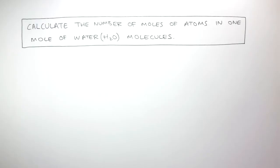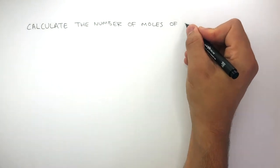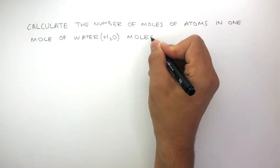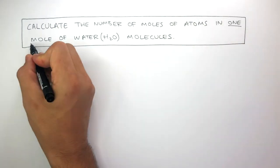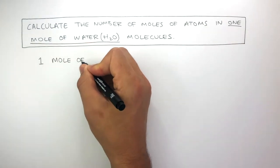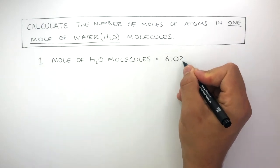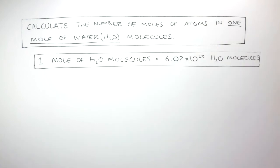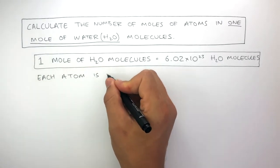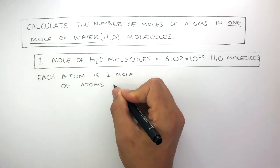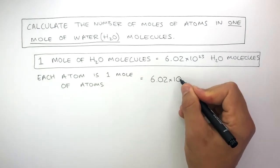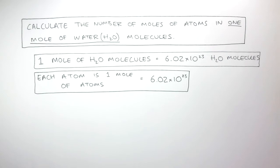Here's a practice exam question: calculate the number of moles of atoms in one mole of water molecules, H₂O. One mole of water molecules equals 6.02 times 10 to the power of 23 water molecules. The chemical formula of water is H₂O — there are three atoms: two hydrogen atoms and one oxygen atom. Within that molecule, each atom represents one mole of atoms, meaning there are 6.02 times 10 to the power of 23 of each atom.